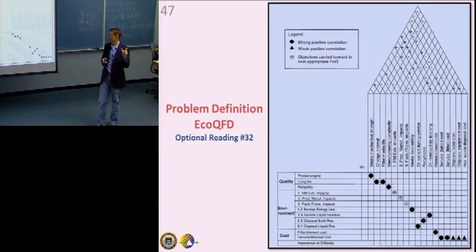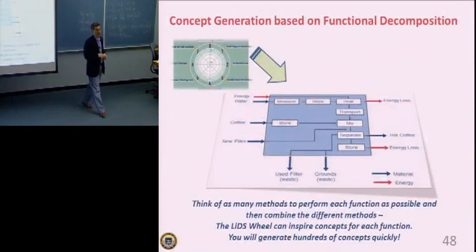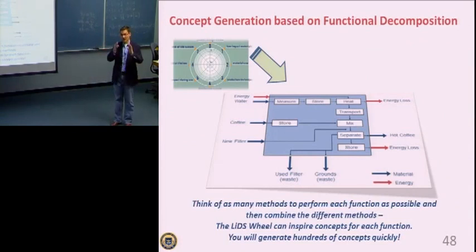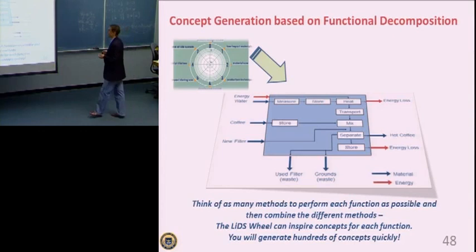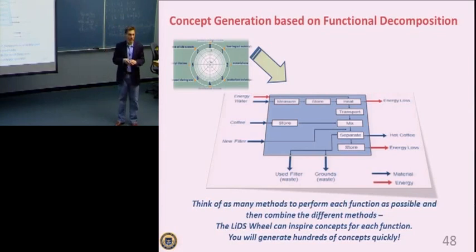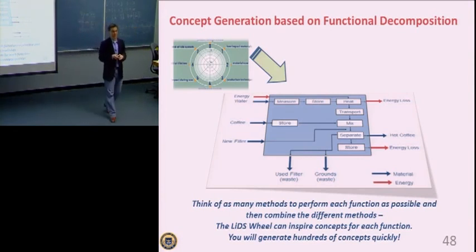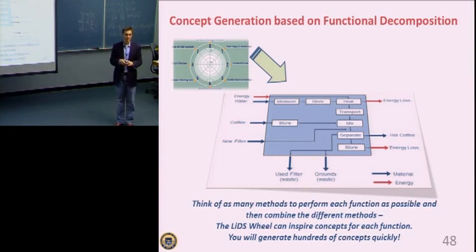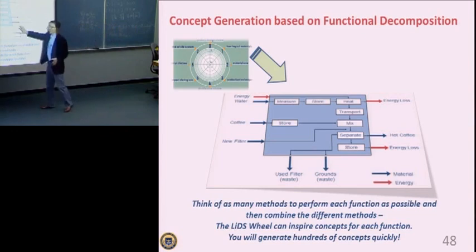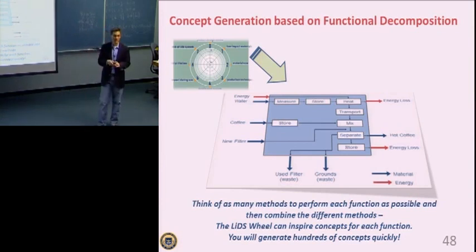So how do you fit sustainability and environment into a sustainable design process? QFD makes it pretty easy if you're using this very common approach — introduced in the 70s. In the definition stage, problem definition: how can we integrate sustainability into concept generation? We can think of each of these functions and consider tens of different ways to perform each function, multiply them together, and get thousands of concepts. Each of those can be evaluated with respect to the LIDS wheel, and the LIDS wheel can inspire new concepts. This is using functional decomposition as a concept generation tool — you can use it to evaluate an existing product or to inspire a new product.